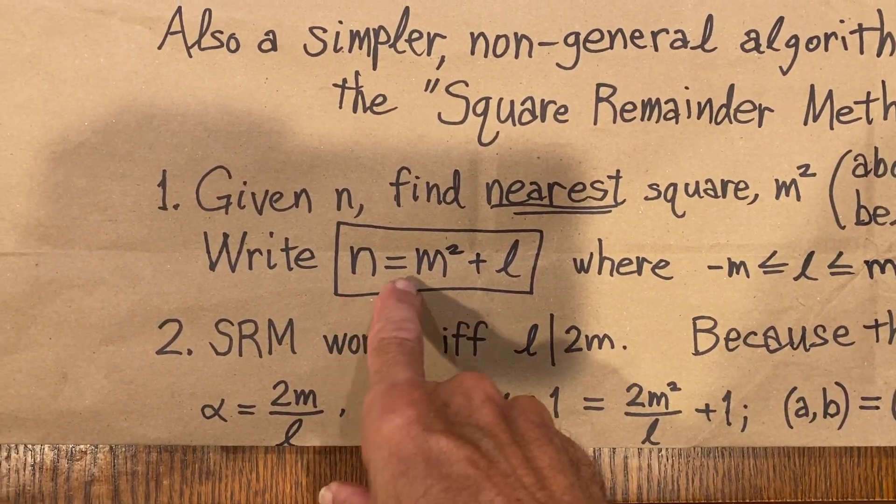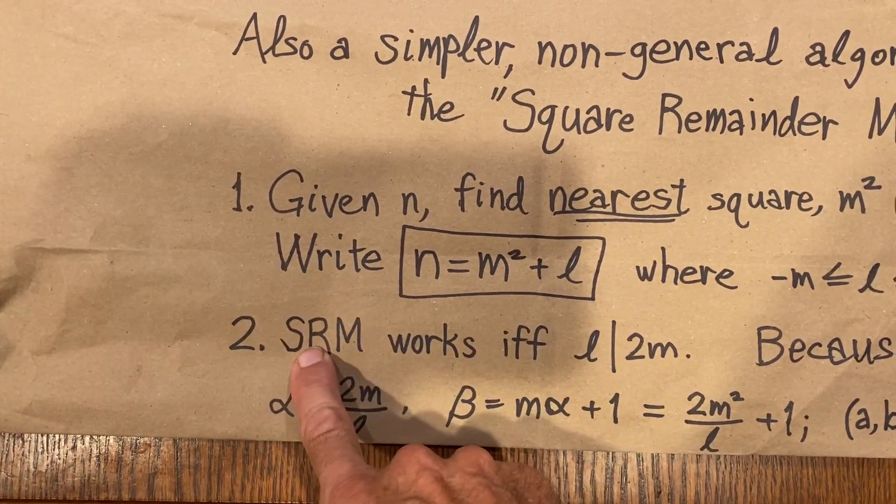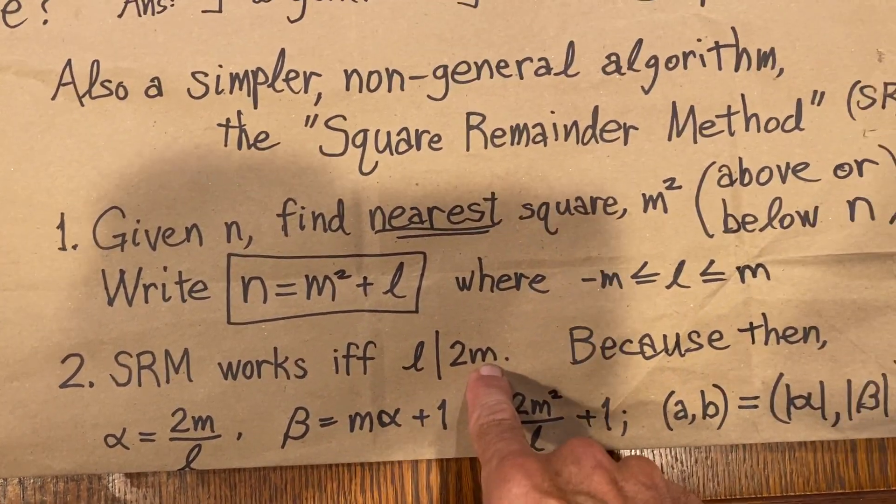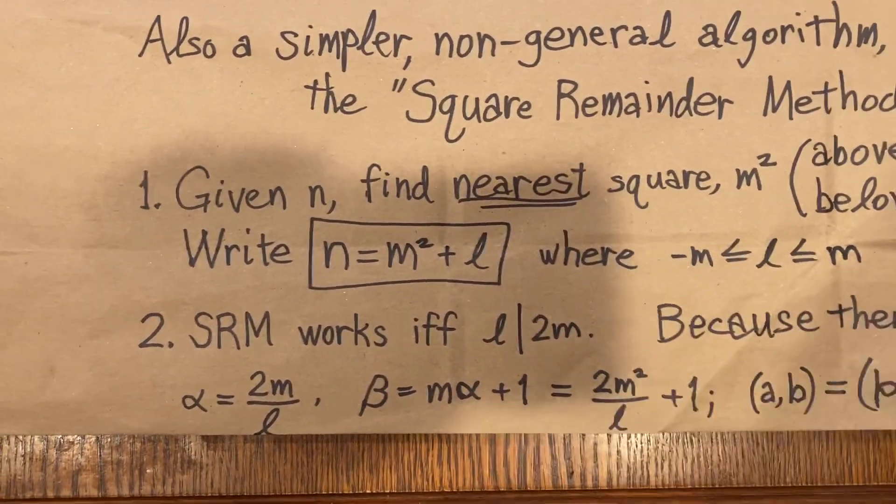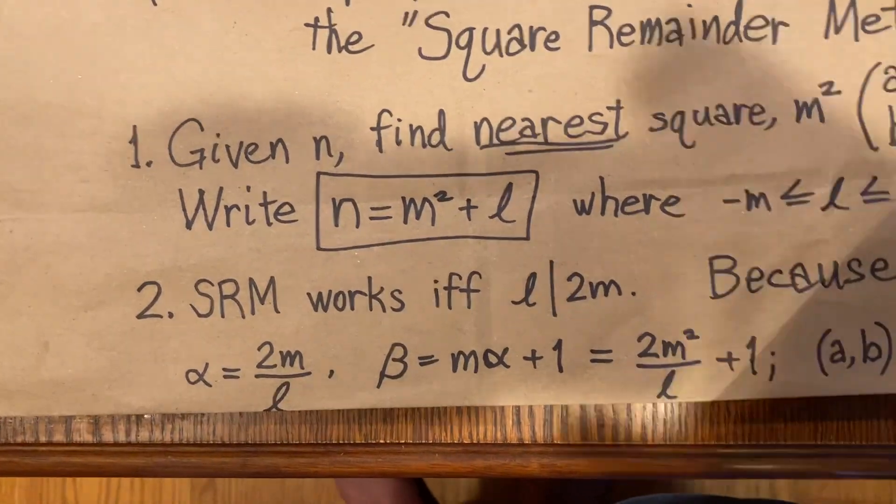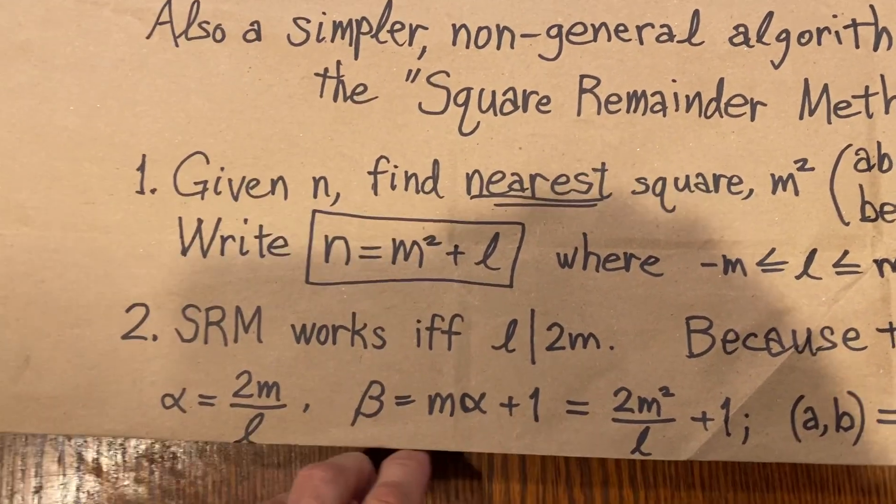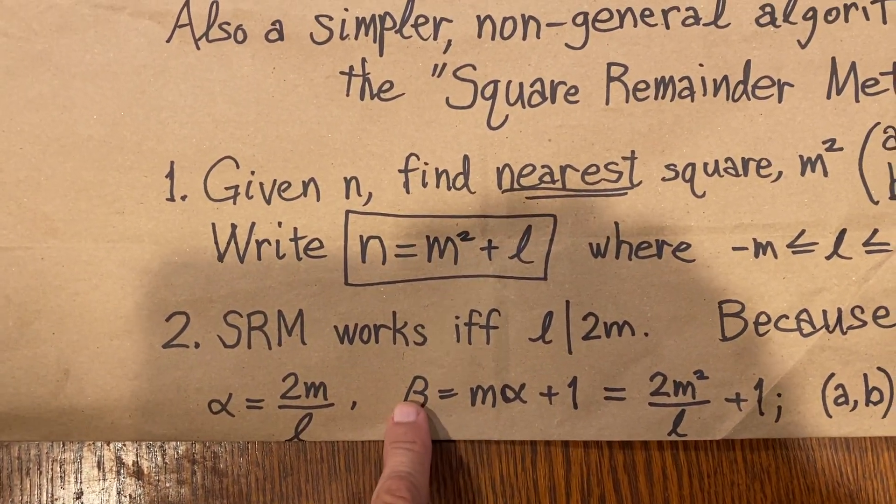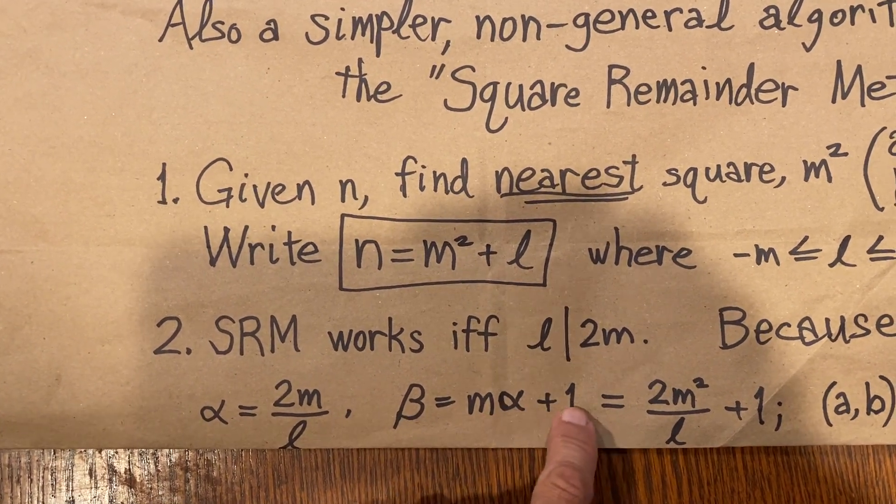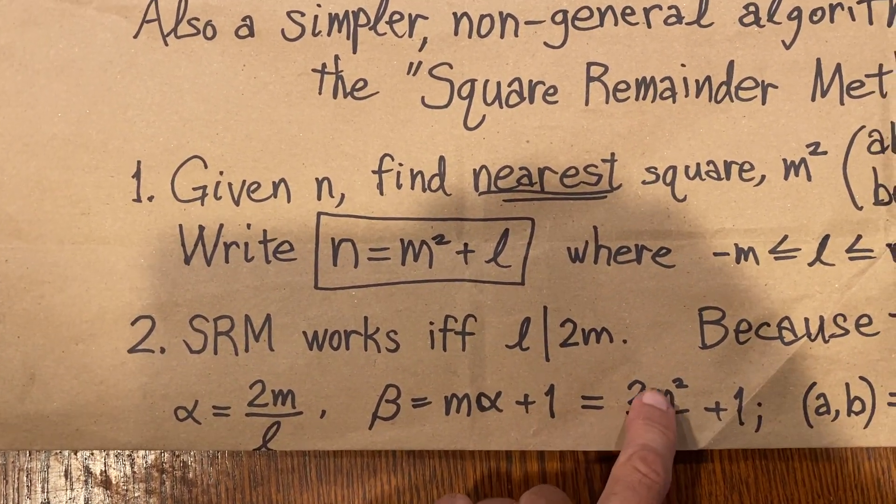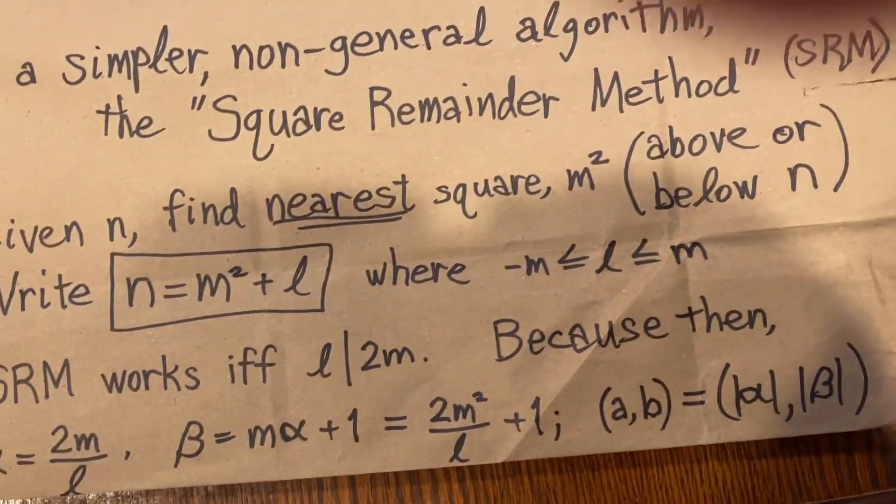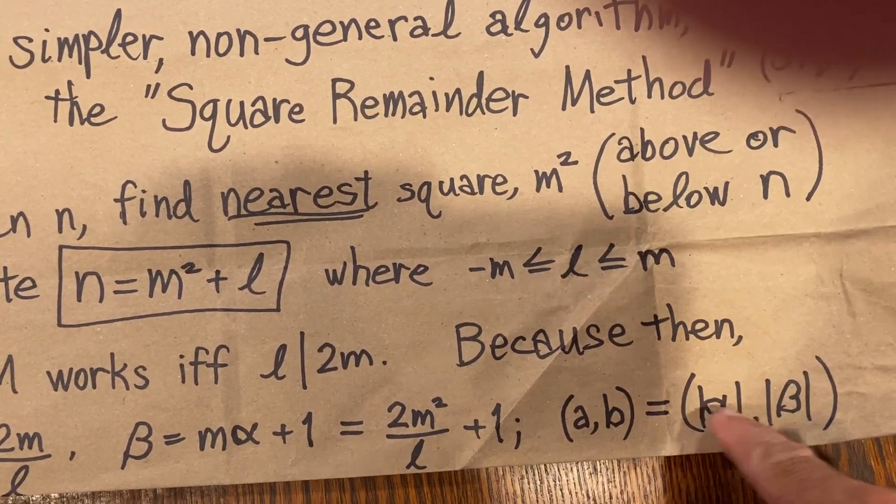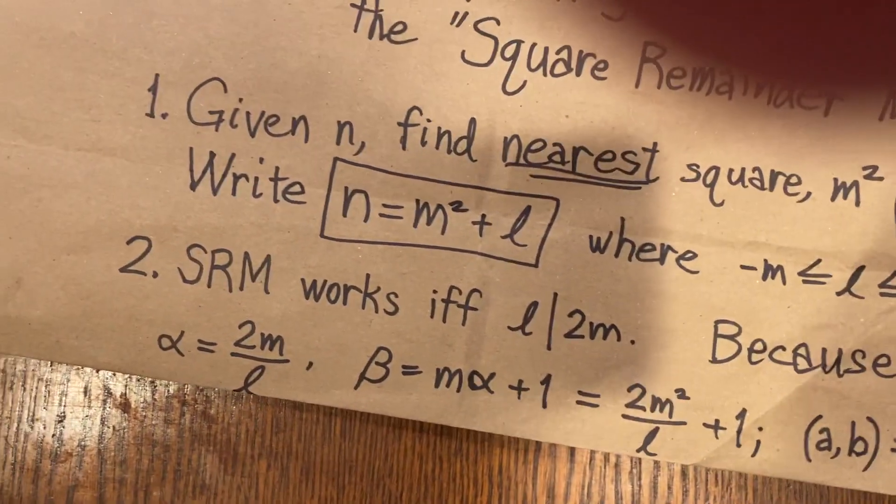Now, this method works, square remainder method, works if and only if l divides 2m. Because in that case, alpha can be taken, defined as 2m over l, which we know is an integer because l divides 2m. Beta can be written as m alpha plus 1. Again, that's an integer. And in terms of m and l, it looks like this. Then the solution a and b that we get from this method is just the absolute values of alpha and beta.